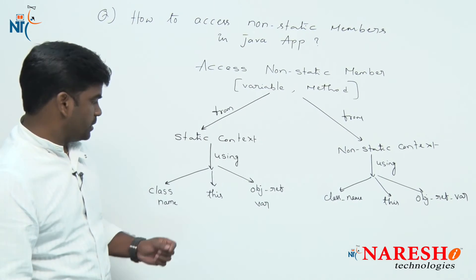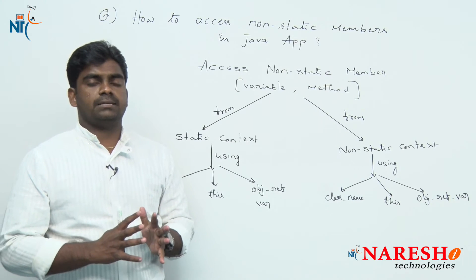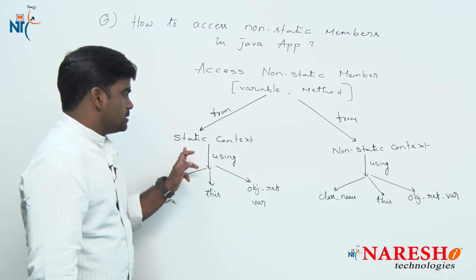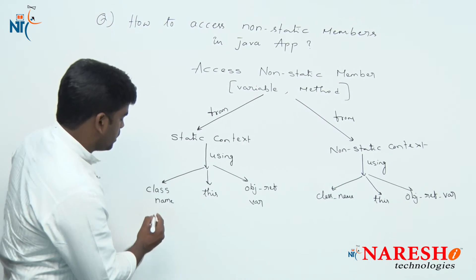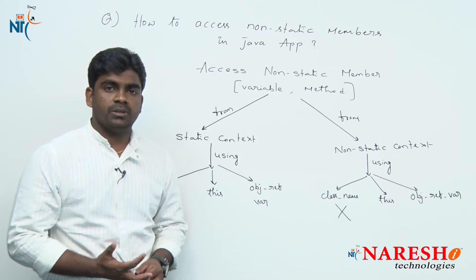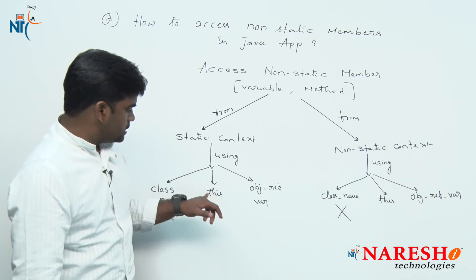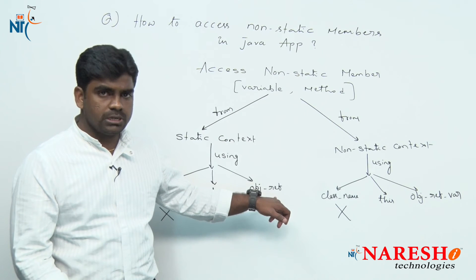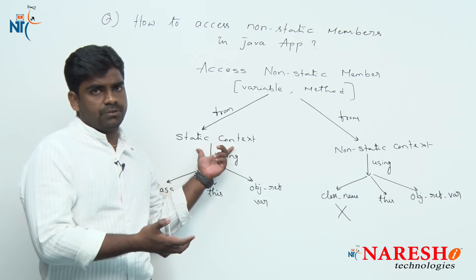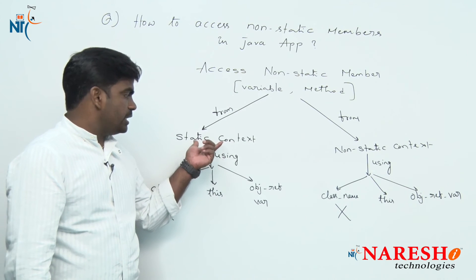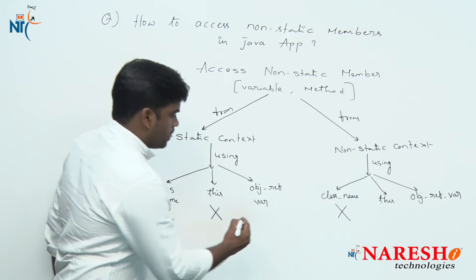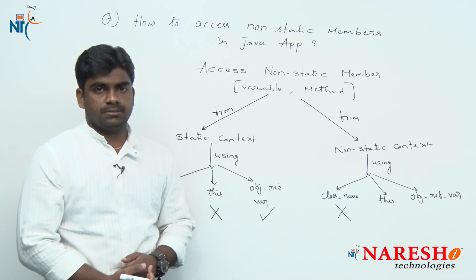Non-static members cannot be accessed using a class name — that is impossible, regardless of whether you are in a static or non-static context. Using 'this' is also not possible inside the static area, as we discussed in a previous FAQ. So from the static context, the only option you have is to use an object reference variable.